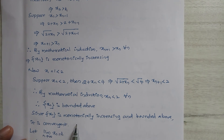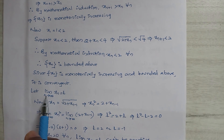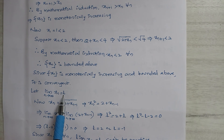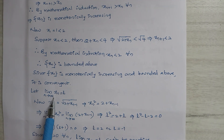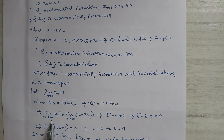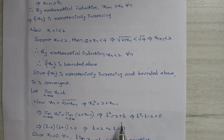Since xn is monotonically increasing and bounded above, it is convergent. Let lim(n→∞) xn = L. Now xn = √(2 + xn-1); squaring both sides gives xn² = 2 + xn-1. Taking limits: lim(n→∞) xn² = lim(n→∞) (2 + xn-1). Since lim xn = L and lim xn-1 = L, this becomes L² = 2 + L.